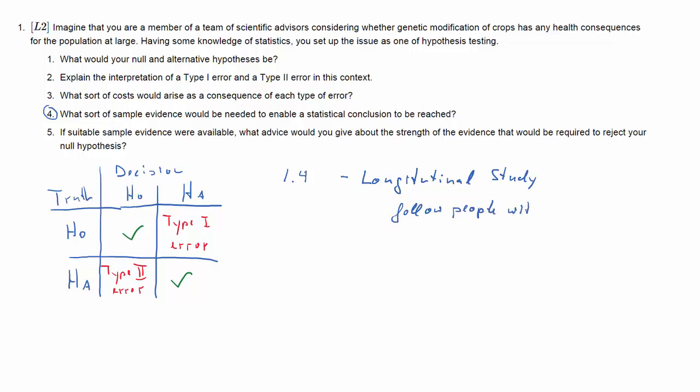There are two types of pieces of evidence you may want to collect. The first one is a longitudinal study where you follow people, some with and some without exposure to GM food. Ideally you have a randomized controlled trial where you allocate people into one of the two groups.